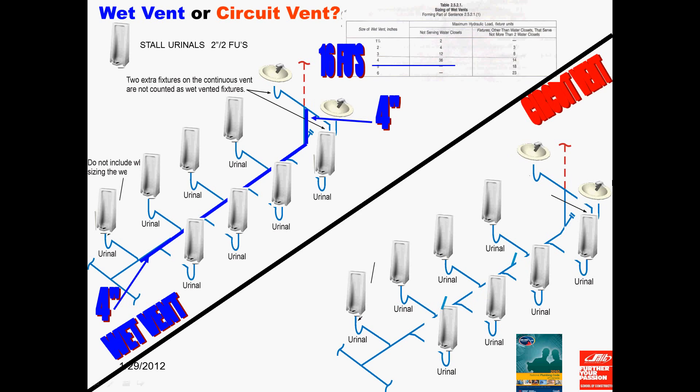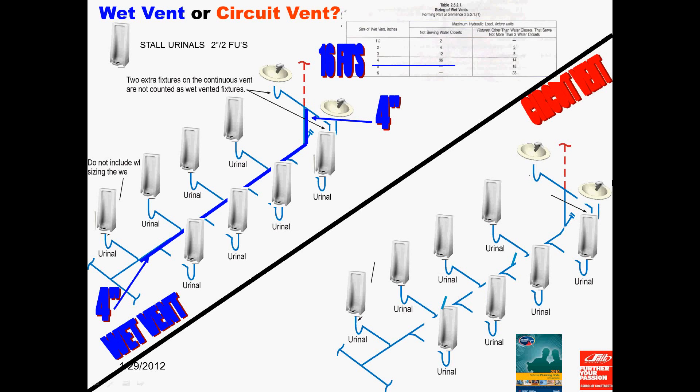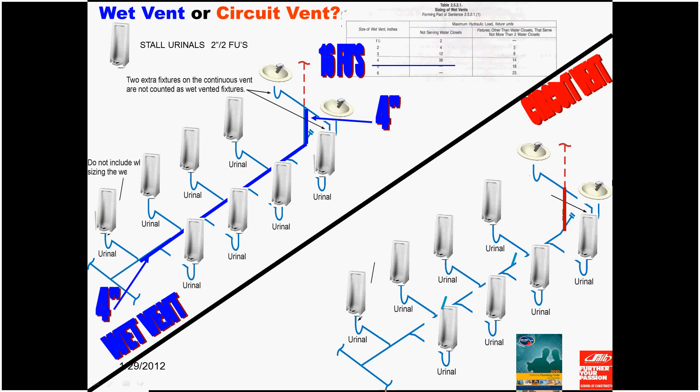So, now we're going to try the exact same layout with the same amount of fixtures on the bottom half of the page. Let's see how the circuit vent changes the size of the pipe, both the drain and the vent size. We will now attempt to circuit vent the same layout of fixtures. So, let's begin on the bottom and let's illustrate where the actual circuit vent is.